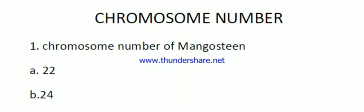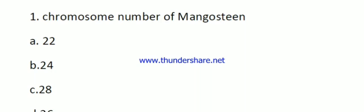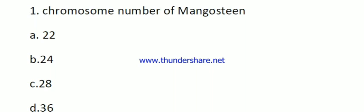Hello everyone, welcome to my YouTube channel Agriquiz. Today I am going to discuss one question on chromosome number of different photographs. Let's start with question number one: chromosome number of mangosteen. The options are 22, 24, 28, and 36. The right answer is 24.